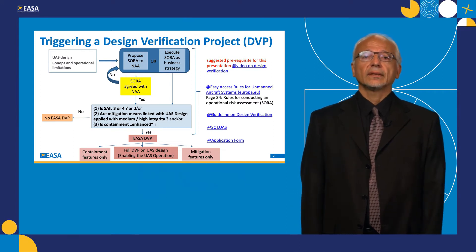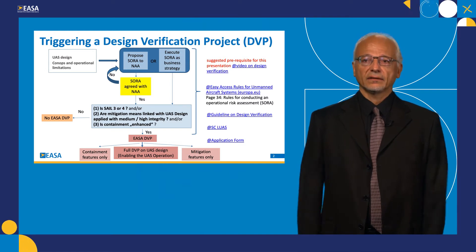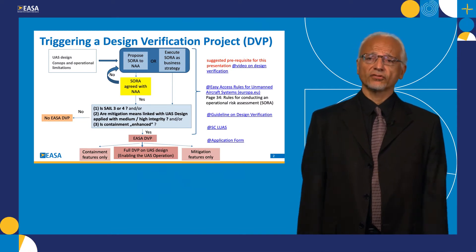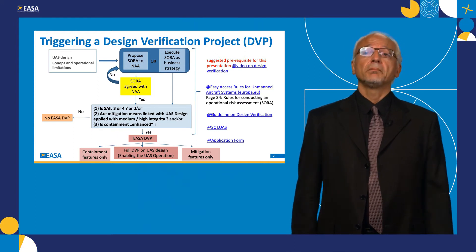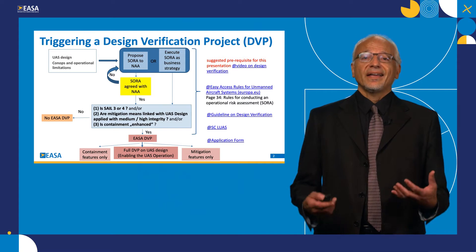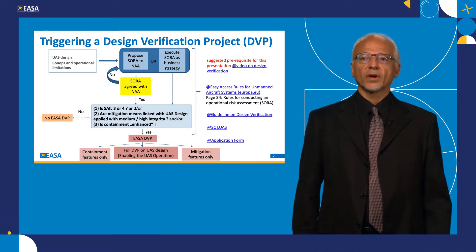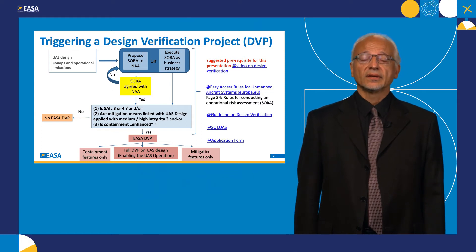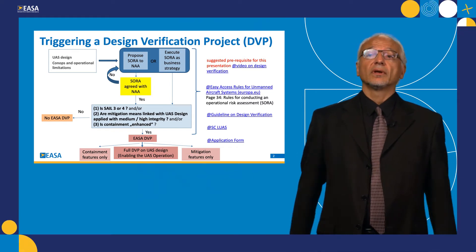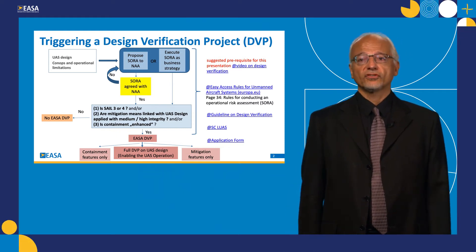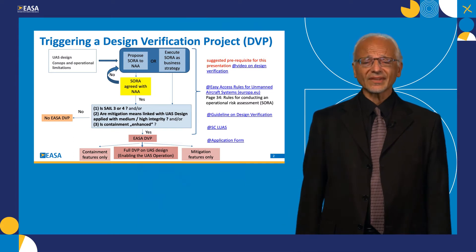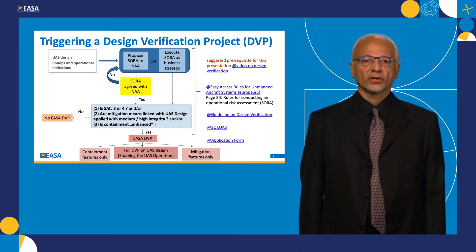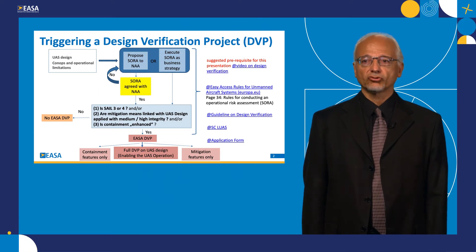At the end of this phase, you need to ask basically three questions. Is the SAIL three or four? The SAIL is the Specific Assurance and Integrity Level, and you can consider it as a measure of the risk of the operation — three or four means medium risk. Second question: are any technical mitigation means used with the UAS to decrease the risk of the operation? And the third question: is the possible containment enhanced, meaning if the drone breaches the adjacent areas and flies outside the operational volume, will this lead to a significant risk? If the answer to any of these questions is yes, then an EASA design verification project can be triggered.